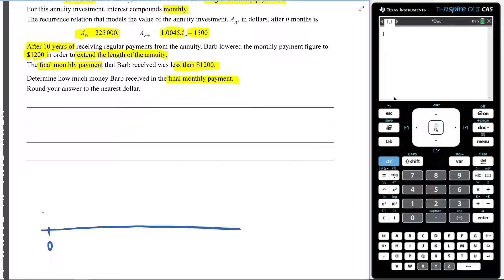So after zero months, I have $225,000 in my annuity. Then after 10 years, something significant happens. After 10 years, I stopped taking out $1,500, and I start taking out only $1,200. So let's deal with that 10 years in the future.